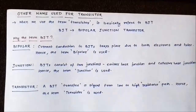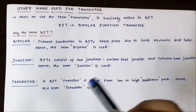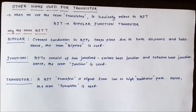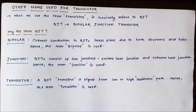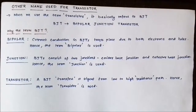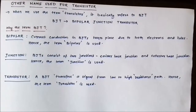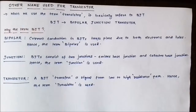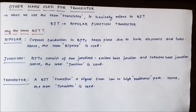Why is the BJT named 'bipolar junction transistor'? In BJTs, current conduction takes place due to both electrons and holes. In an NPN transistor, electrons are the majority charge carriers and holes are the minority, while in a PNP transistor, holes are the majority and electrons are the minority. Please check out my video on semiconductor physics for more detail on intrinsic and extrinsic semiconductors and majority and minority charge carriers.